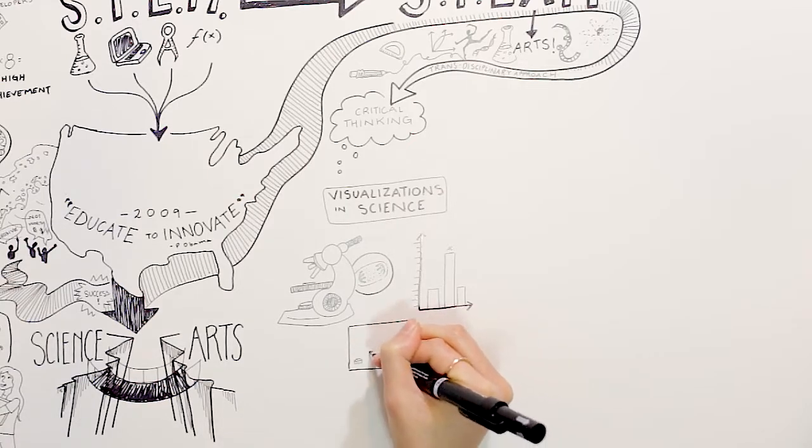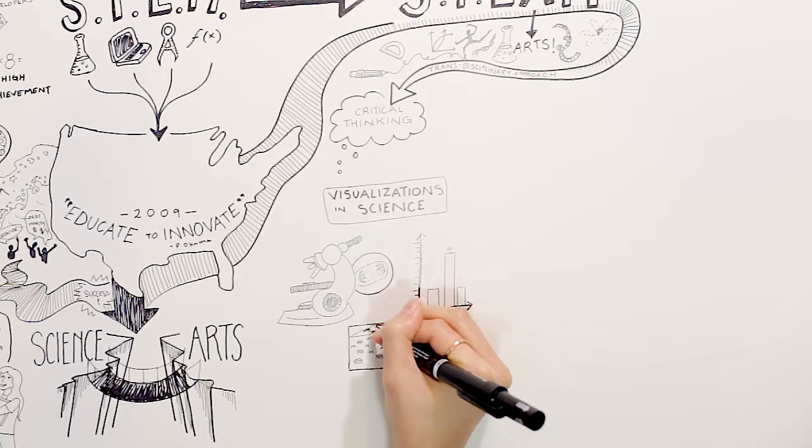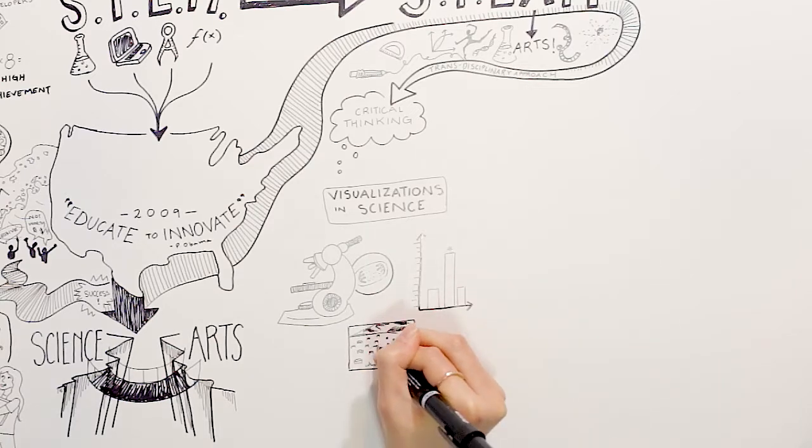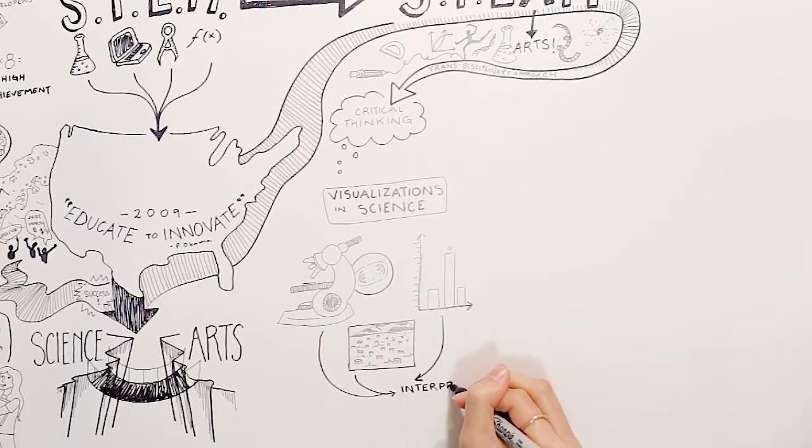Ainsworth and colleagues, in their article titled Drawing to Learn in Science, argues that learning requires an ability to interpret visual information. Likewise, the ability to represent information visually is critical for becoming a skilled student in science.